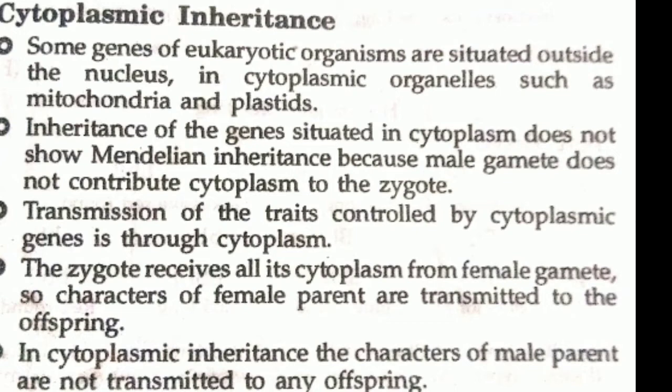The nucleus contains our genetic material, that is DNA, but some genes are not in the nuclear DNA — they are in the cytoplasmic DNA, such as in mitochondria and plastids. These two organelles contain DNA which we call mitochondrial DNA and plastid DNA. This is also known as extra-nuclear DNA, sometimes referred to as plasmid.